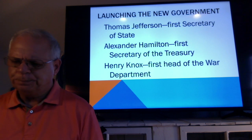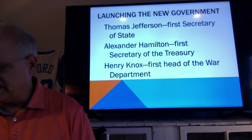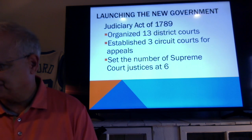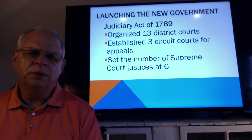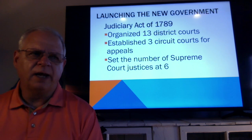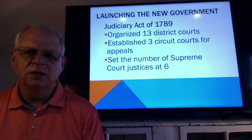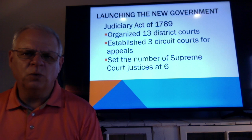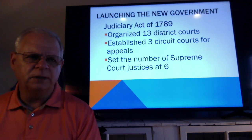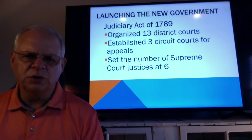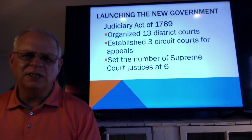There were several things they wanted to see happen as soon as the Constitution was passed, whether by law or by amendment. The new government in 1789 immediately passed the Judiciary Act. They organized 13 district courts — one for each state — and three circuit courts for appeals. A circuit court of appeal has several judges sitting on it and covers a region.